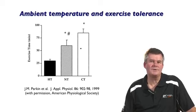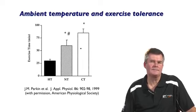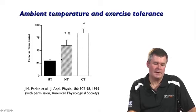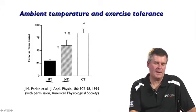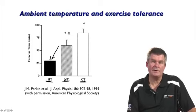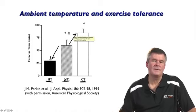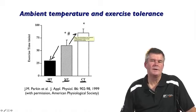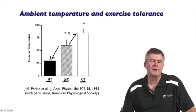If you superimpose environmental temperature on exercise-induced heat production, that's an additional challenge for the athlete. Going from a normal temperature of about 20 degrees to a hot environment at 40 degrees results in a marked reduction in exercise tolerance. Interestingly, moving from 20 degrees to 3 degrees actually increases exercise tolerance. This suggests that even the thermal load at 20 degrees can impact performance, such that moving to a cooler environment and facilitating heat removal can improve exercise performance.